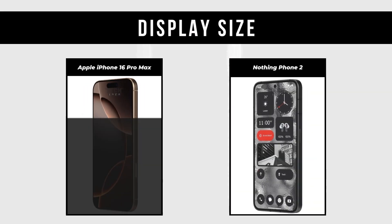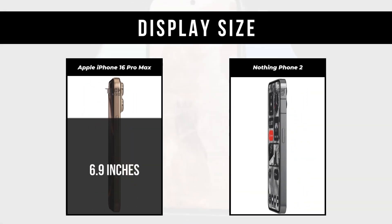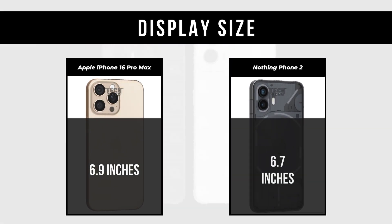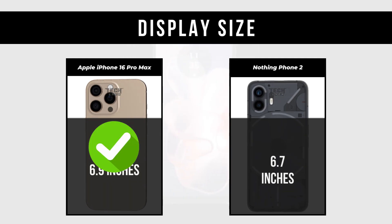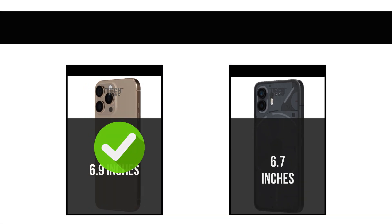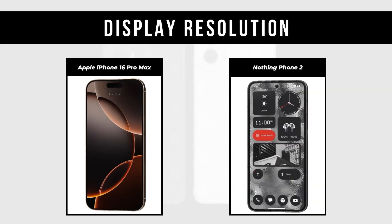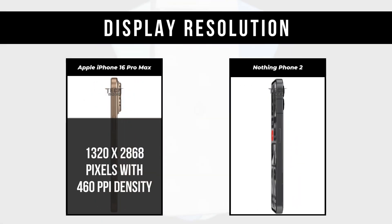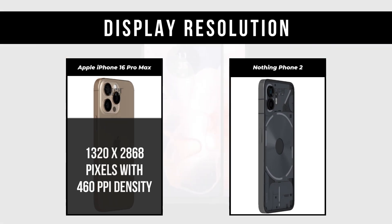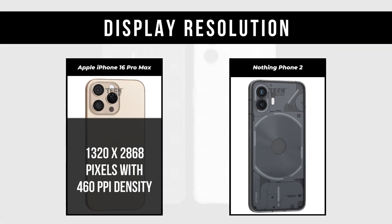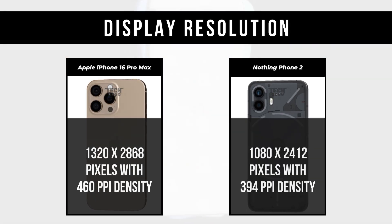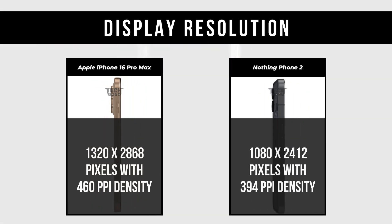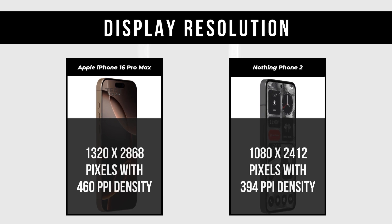Display Size: Apple iPhone 16 Pro Max is 6.9 inches; Nothing Phone 2 is 6.7 inches. Display Resolution: Apple iPhone 16 Pro Max is 1320 x 2868 pixels with 460 ppi density; Nothing Phone 2 is 1080 x 2412 pixels with 394 ppi density.